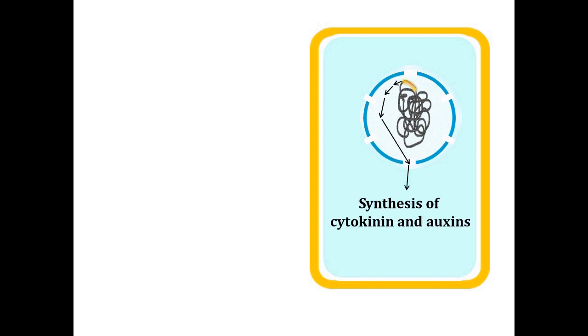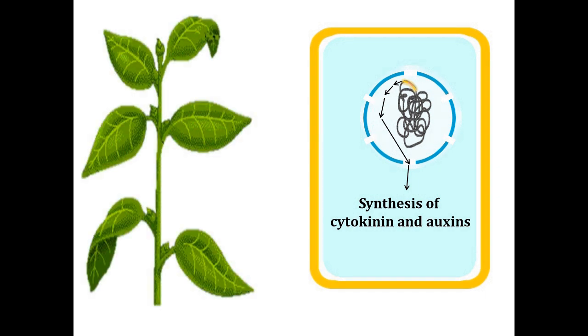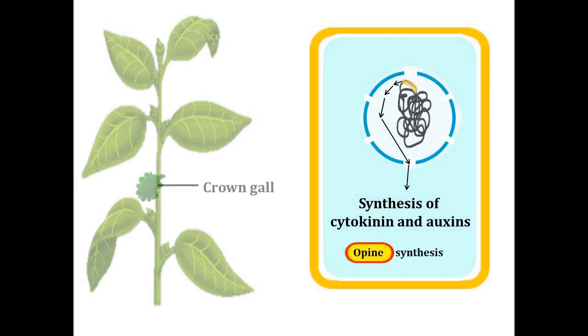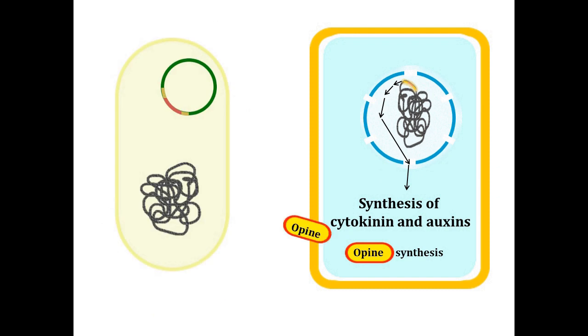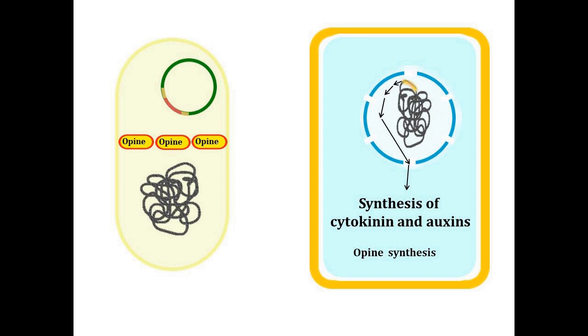A number of genes are encoded in T-DNA and become expressed in plant cells. Some of the gene products are responsible for synthesis of the plant hormones cytokinin and auxin, which triggers plant cells to divide rapidly and form an undifferentiated mass known as crown gall tumor. T-DNA also controls production of unusual amino acid derivatives called opines. In return for delivering T-DNA to plants, the bacterium gets opines as a source of nitrogen.